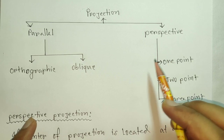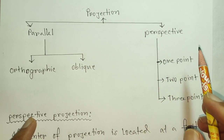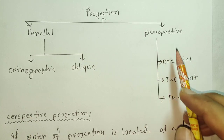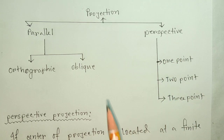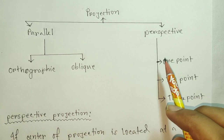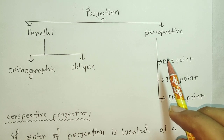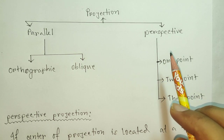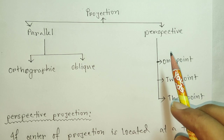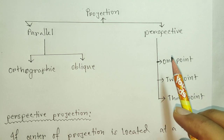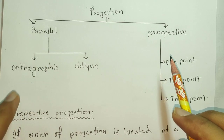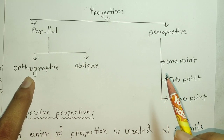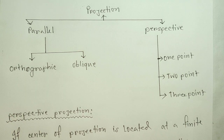In perspective projection, parallel lines do not remain parallel — they converge. Perspective projection looks more realistic. Parallel projection is less realistic but useful for technical purposes. Perspective projection gives a realistic appearance, while parallel projection is less realistic overall.